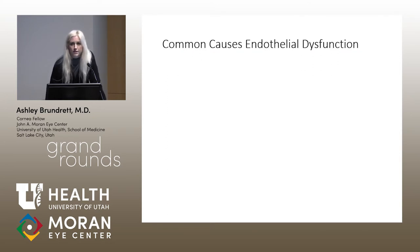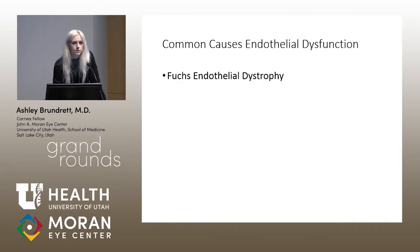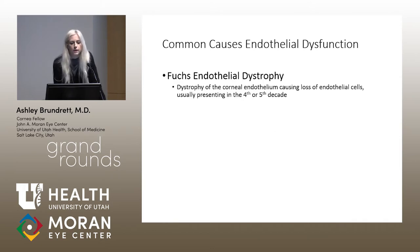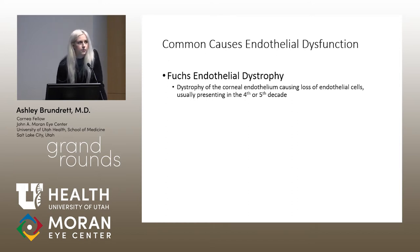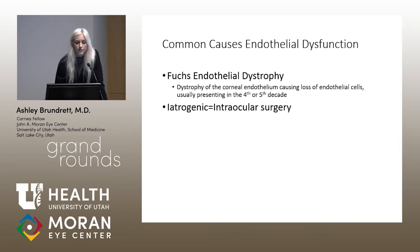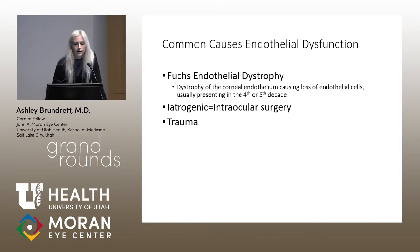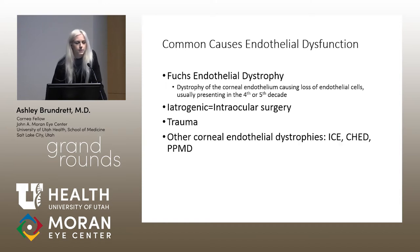The most common causes of endothelial dysfunction that we encounter: number one, Fuchs endothelial dystrophy — a dystrophy of the endothelium causing eventual loss of endothelial cells, usually presenting in the fourth or fifth decade of life. Iatrogenic causes, typically after intraocular surgery, trauma, and also other corneal endothelial dystrophies, congenital or otherwise.